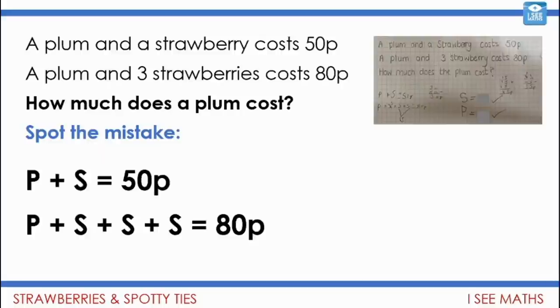So I'm going to show how this could well be done incorrectly. See if you can find where the mistake is. So we could say, well, a plum and a strawberry, so P stands for plum and S stands for strawberry. A plum plus a strawberry is 50p. A plum plus three strawberries equals 80p. So that means let's look at the difference between 50p and 80p. That's 30. So that means a strawberry costs 30p.